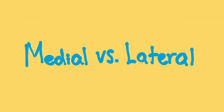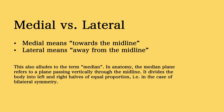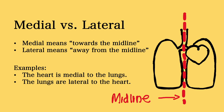Next, we have the words medial and lateral. Medial means towards the midline of the body and lateral means away from the midline of the body. This also alludes to the term median — in anatomy, a median plane refers to a plane passing vertically through the midline, relating to the concept of bilateral symmetry. An example is that the heart is medial to the lungs, meaning the heart is closer to the midline of the body than the lungs are. Another way to see this is that the lungs are lateral to the heart.